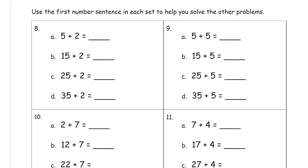Use the first number sentence in each set to help you solve the other problems. We're doing the same thing except we don't have the pictures, but we're going to think about the numbers the same way. There's the five plus two — you're going to see all five plus twos in this box; we're just adding tens to them. Five plus two is seven, so fifteen plus two is seventeen, twenty-five plus two is twenty-seven, and thirty-five plus two is thirty-seven.